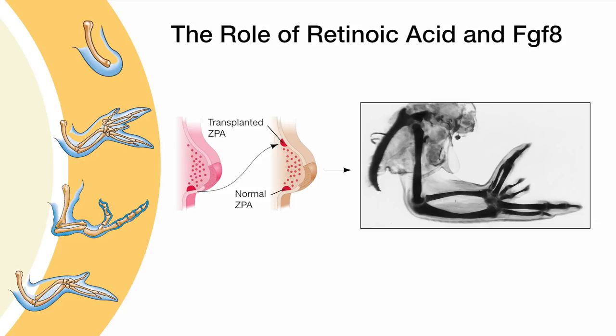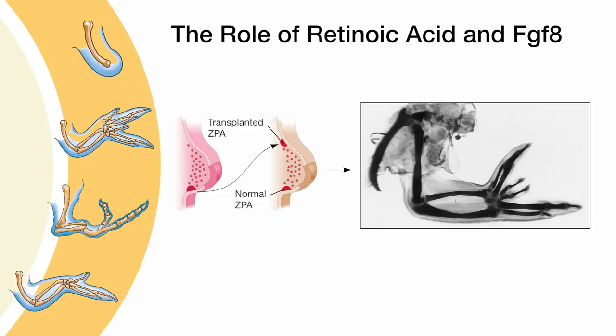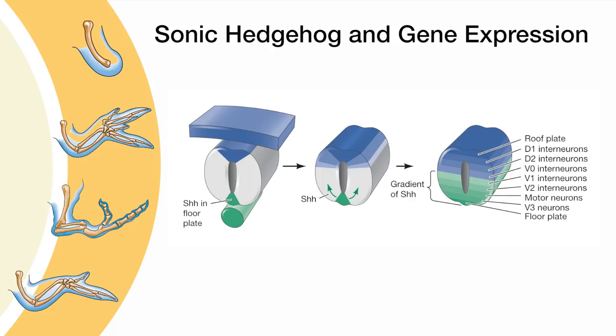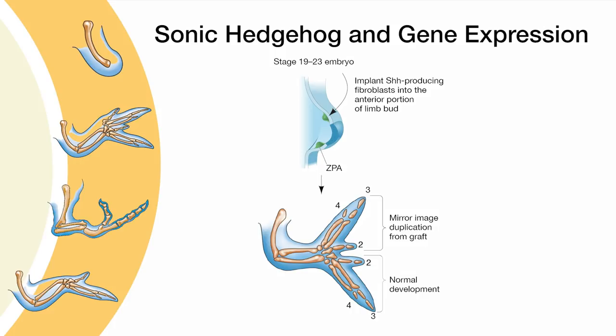How are anterior to posterior fates determined? Do you recall that amazing ZPA transplant experiment that caused the mirror image digit duplication? That has everything to do with understanding anterior to posterior cell specification. Sonic Hedgehog was discovered to be solely expressed in the ZPA domain. Sonic Hedgehog is one of the most well-known morphogens for its role in the developing spinal cord, where its spatial and temporal graded secretion leads to differential gene expression along the ventral to dorsal axis of the neural tube. Misexpression of Sonic Hedgehog on the anterior side of the limb bud produces the very same mirror image duplication, suggesting Sonic Hedgehog is sufficient for the activity of the ZPA.